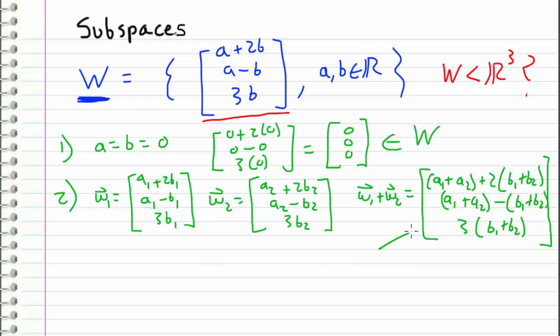So in order to check whether or not this sum is an element of W, all we have to do is see if this vector right here fits the form defined in our set. And upon inspection, we can say, hey, let's let A equal to A1 plus A2. And let's let B equal B1 plus B2. So if we were to replace, if we were to substitute in these expressions into our sum, what we would get is the vector A plus 2B, A minus B, and 3B, which matches the form of our set. So we know that the sum of these two vectors is an element of W. Therefore, we can conclude that this is indeed closed under addition.